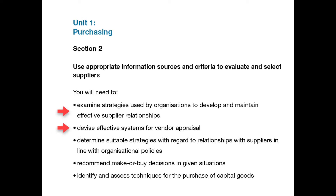Following on from the two points above, on bullet point 3, you need to describe a minimum of two strategies which would ensure that relationships built up with suppliers are in line with and support organisational policies — for example, in the case of business ethics, environmental management, corporate social responsibility and quality standards.